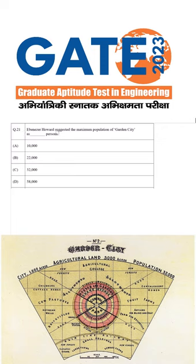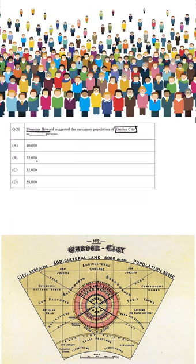Question No. 21: Ebenezer Howard suggested the maximum population of Garden City as per dash person. What is the maximum population of Garden City?